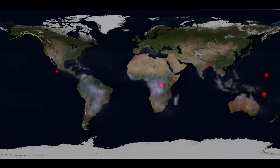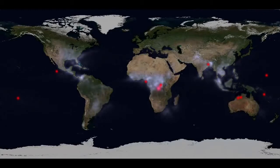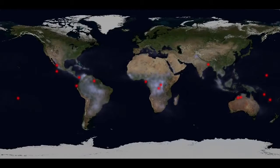These dots mark TGFs observed by Fermi's gamma ray burst monitor during the spacecraft's first eight months of operations. Researchers estimate that there may be as many as 500 TGFs each day.